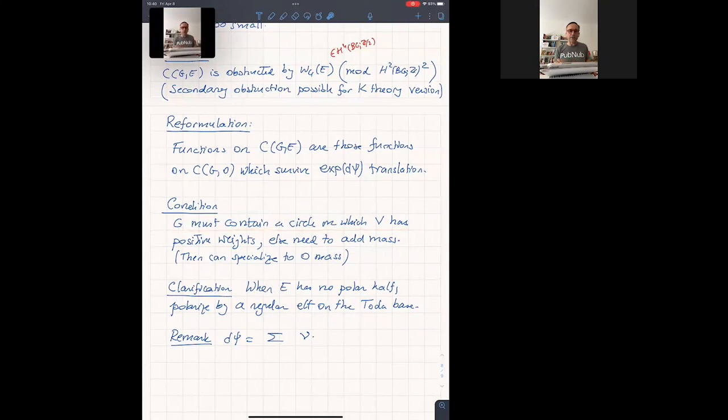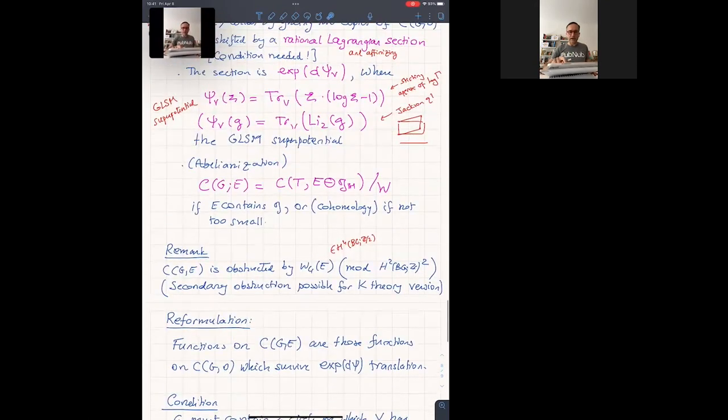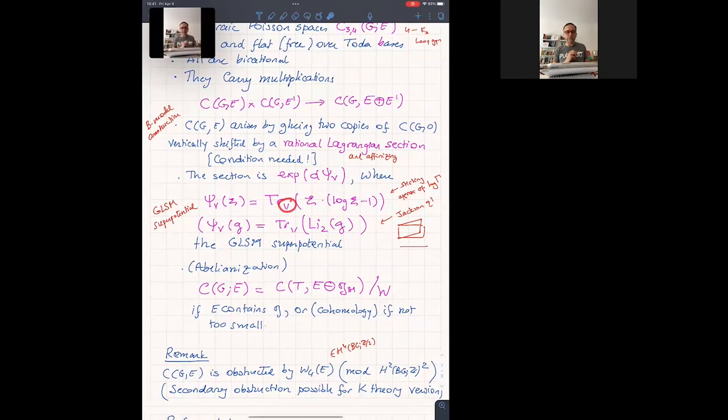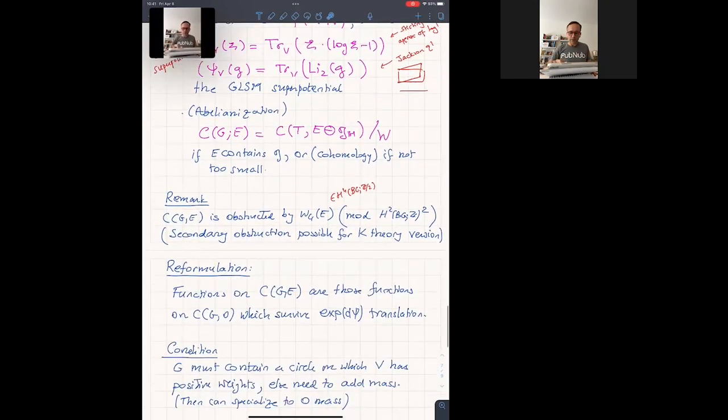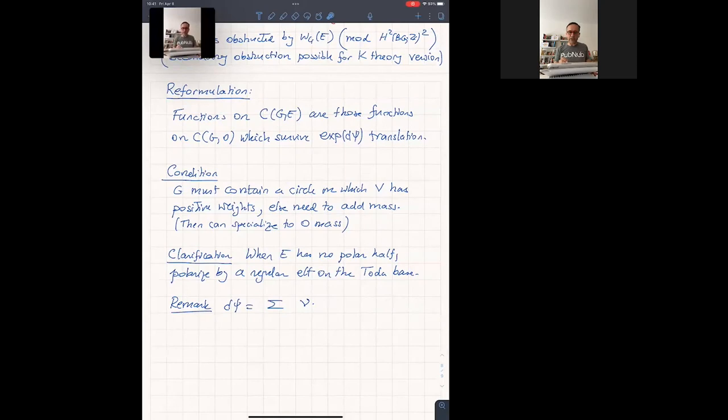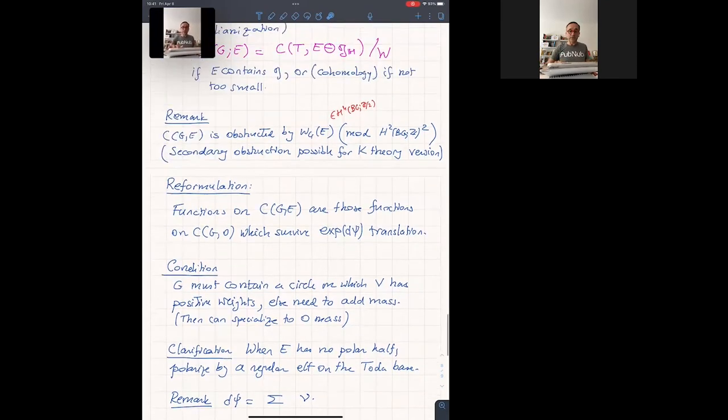All right. So I said somewhere condition needed, which I didn't state. For this to be true, one of two things must happen. Either G contains a circle for which a representation of V has positive weights, strictly positive, or else need to add a mass parameter. And then at the end, you can specialize to T. And the final thing I said is, well, this construction works for non-polarized representation, but how could it? Because here I'm using a polar half. Well, you don't have a polar half, but if you restrict to a regular element in the Lie algebra and you keep the positive weight half of E, well, there's a half.